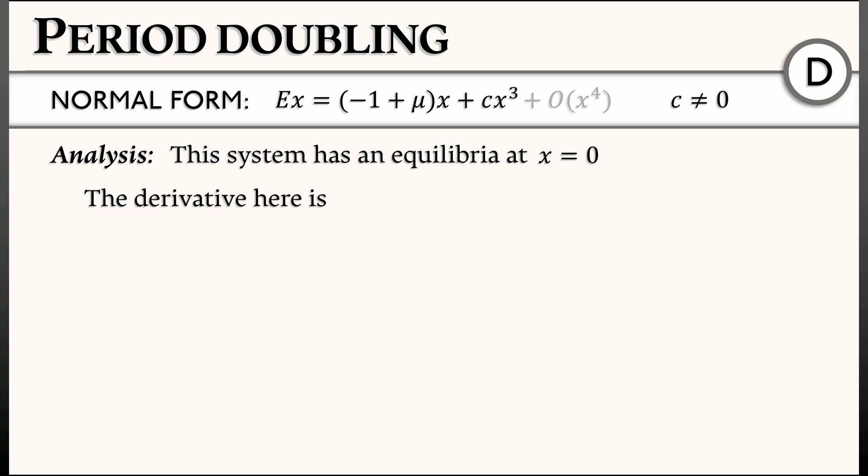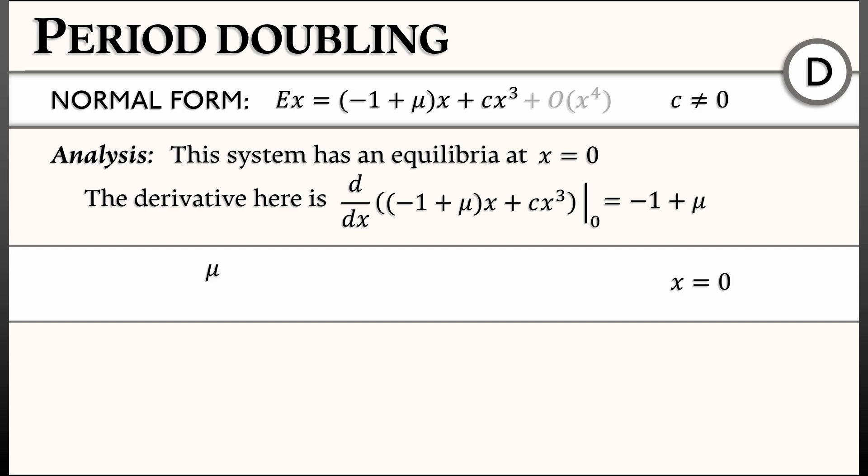To analyze it, we take the derivative of the right-hand side. That derivative, evaluated at zero, is clearly negative one plus mu. That means that when mu is negative, this is an unstable equilibrium. When mu is positive, this is a stable equilibrium.